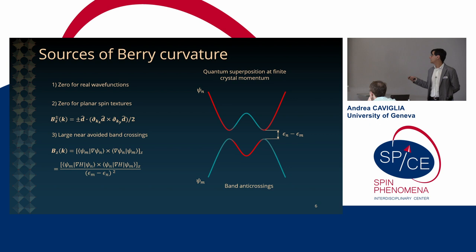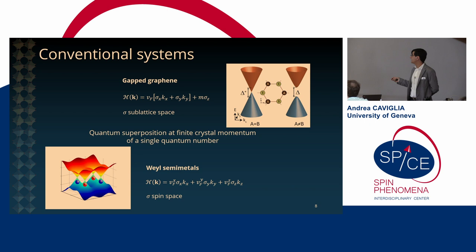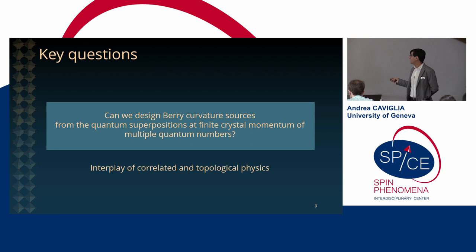And so the community has been very successful in looking at this type of physics at the k points for example of gapped graphene. So here we are dealing with the superposition of a sub-lattice space. Or another example are Weyl semi-metals where here we have a superposition of a spin space. Common to these systems is the fact that we are far away from the gamma point and more importantly here we are looking at a superposition of a finite crystal momentum of a single quantum number. Either a sub-lattice or a spin space. And what we wanted to look at is the possibility of looking at more complex materials in which we can engineer some superposition of orbital states at finite crystal momentum with multiple quantum numbers. So spin and orbitals at the same time being in some entanglement. And this in principle could allow us to explore an interplay between correlation and topological physics.